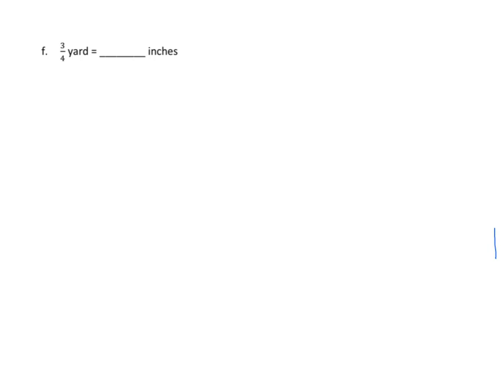The final unit conversion is yards to inches. Kids sometimes get confused with this. We can memorize it or convert step by step: one yard equals three feet, and each foot is twelve inches, so three times twelve is thirty-six. The conversion factor between yards and inches is thirty-six. You should know this — if not, that's how you figure it out — but we need to know these conversion factors.